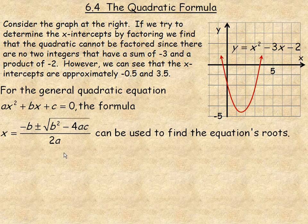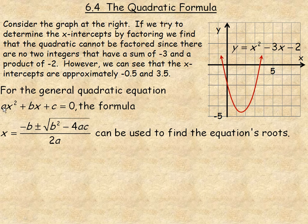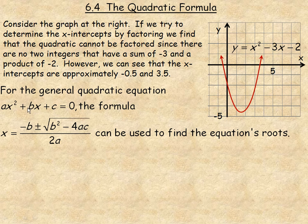To solve that, we have the quadratic formula: x equals negative b — the negative of the linear term coefficient — plus or minus the square root of b squared minus 4 times a times c, all over 2a, which is 2 times the coefficient of the quadratic term. This formula can be used to find the roots or solutions to any quadratic equation.